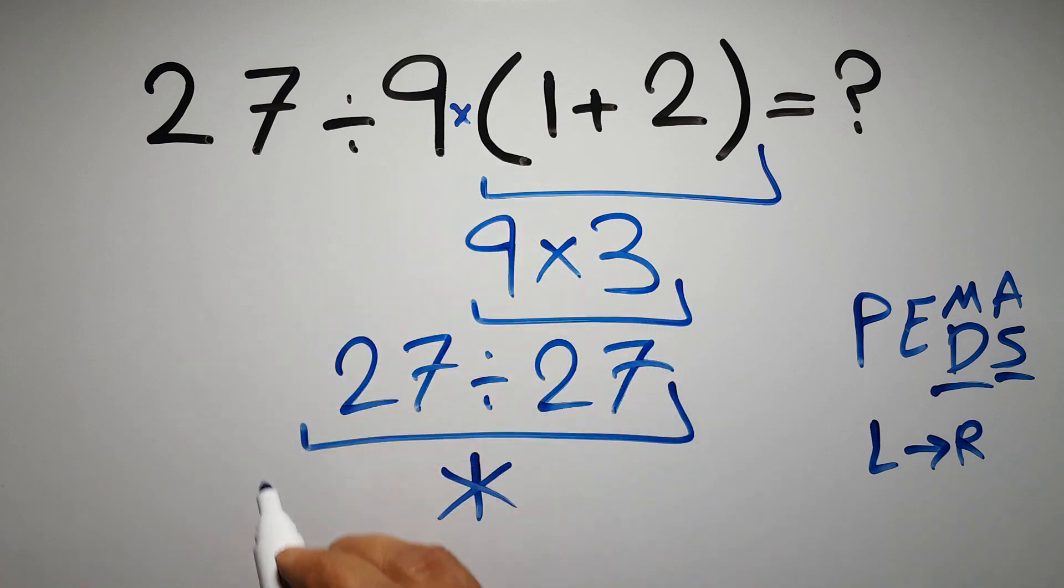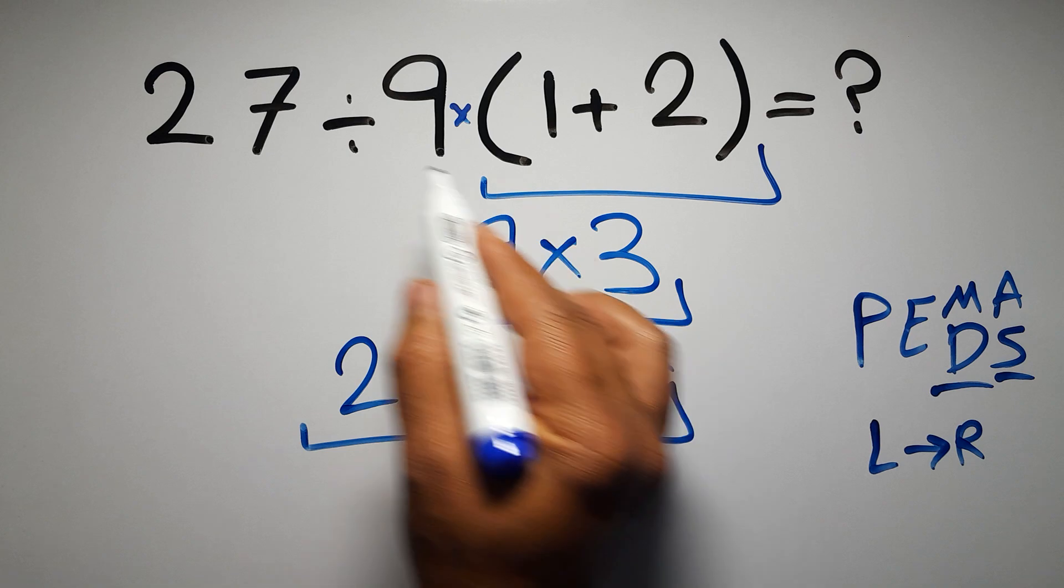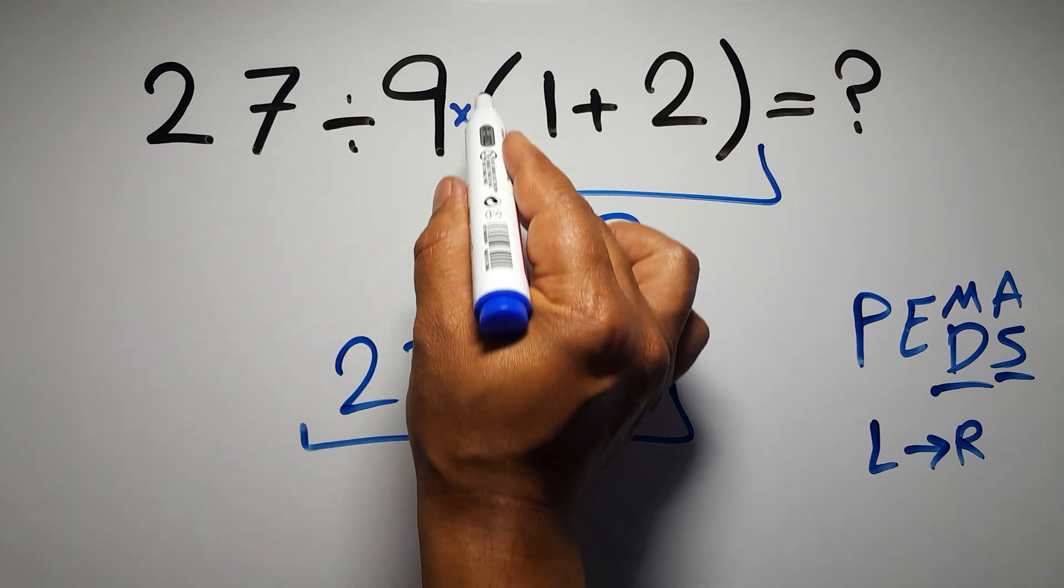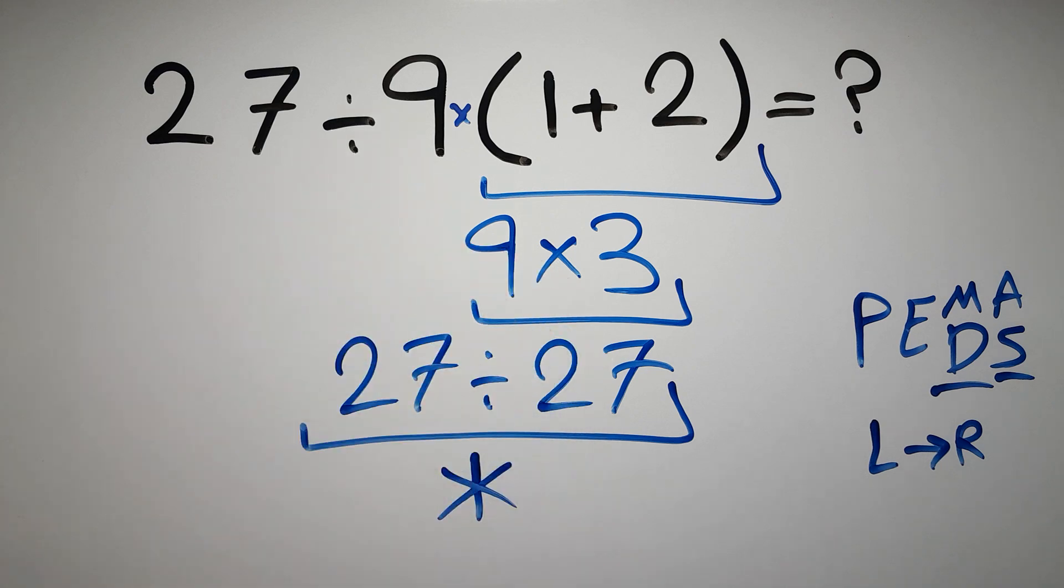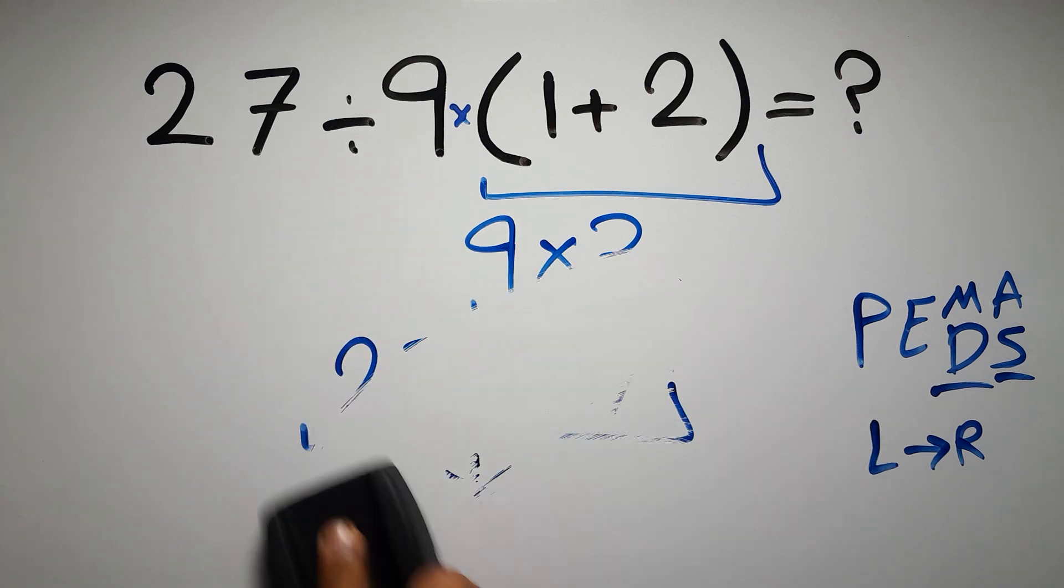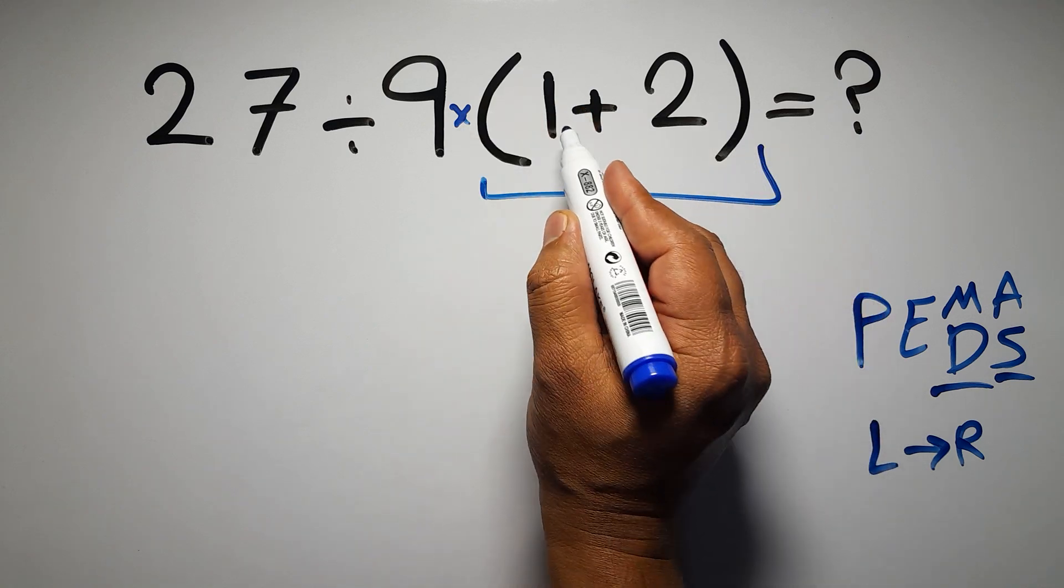So according to PEMDAS, first we have to do this parentheses, then this division, and finally this multiplication. If we do this multiplication before this division, it is wrong. So first, the parentheses.